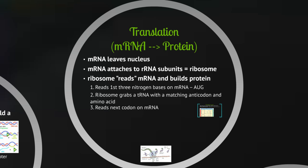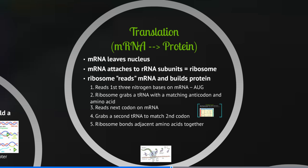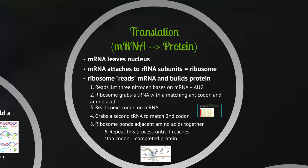The ribosome is going to slide over and read the next codon on the messenger RNA — the three-letter code — and it's going to grab a second transfer RNA to match that second codon. Now we have two amino acids next to each other, and the ribosome is going to bond those adjacent amino acids together. This process repeats, bringing in a transfer RNA with the matching amino acid, bonding to the growing chain, until you reach the stop codon in the messenger RNA.